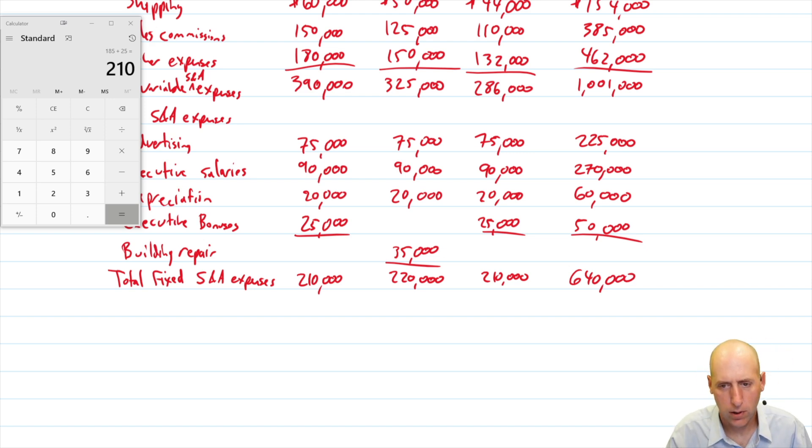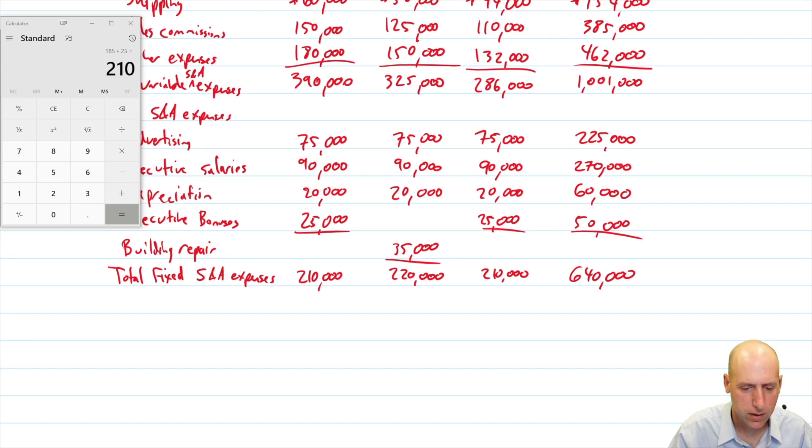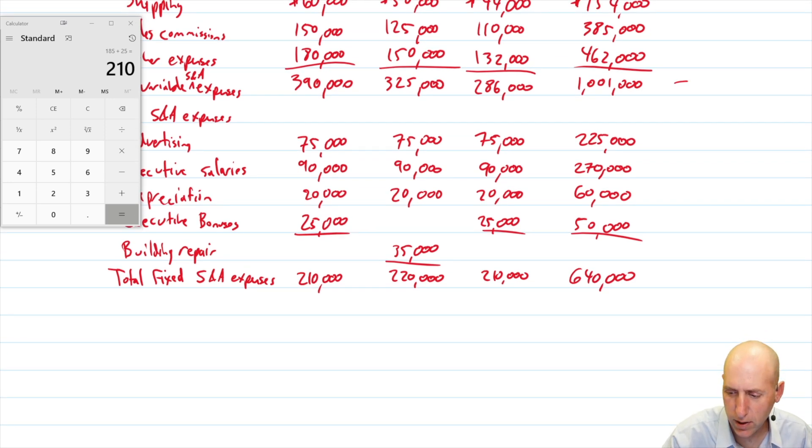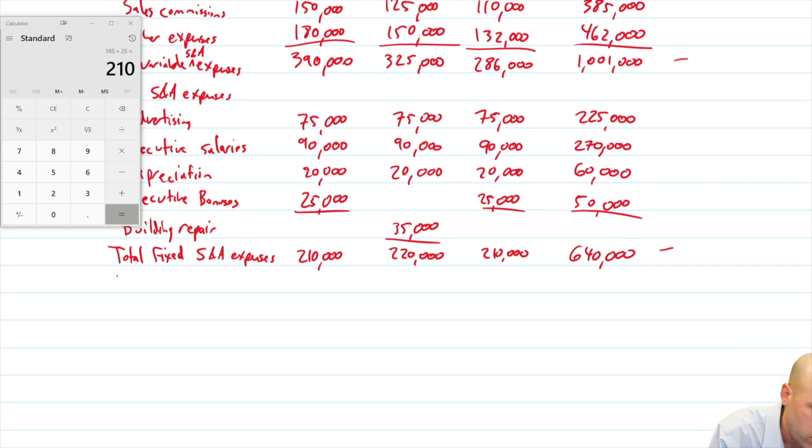Okay, so we've got our total variable. We've got our total fixed. Let's add variable plus fixed. Here's our variable. Here's our fixed. Let's add them together for our total selling and admin expenses. 210 plus 390. That's 600.